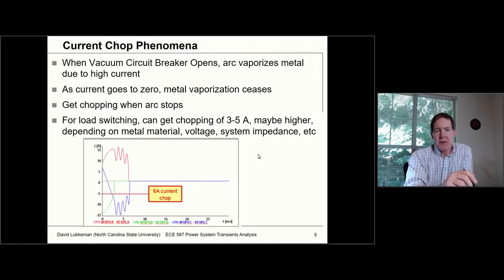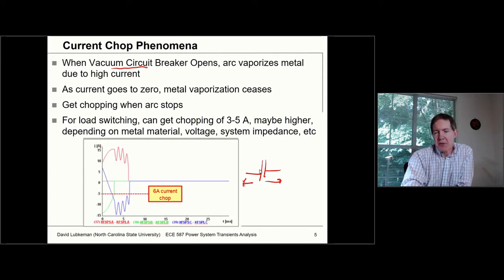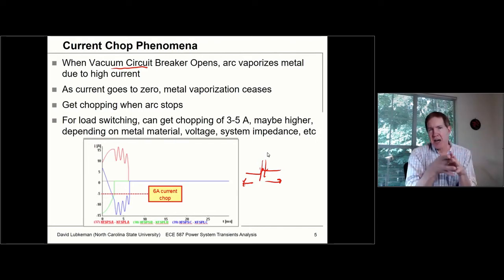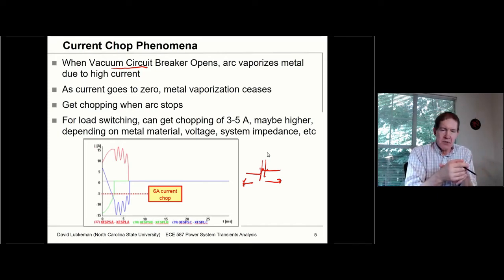What Shipp talks about in this paper is the current chop phenomena, which we're now seeing with vacuum circuit breakers. What happens is you have these contacts opening in a vacuum, and you have a plasma arc that exists between the contacts as they start to open. The metal vaporizes because temperatures are so high.